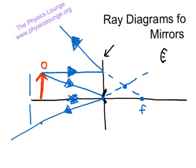So, this is the point where we're going to draw our image, where those imaginary light rays appear to come from. So, I for image, imaginary light rays.